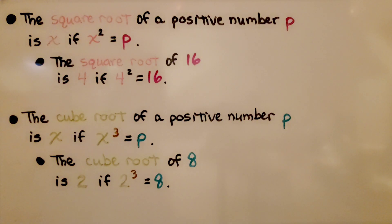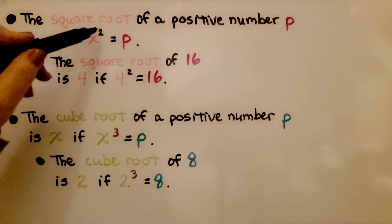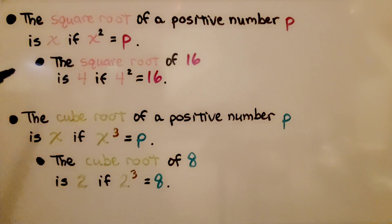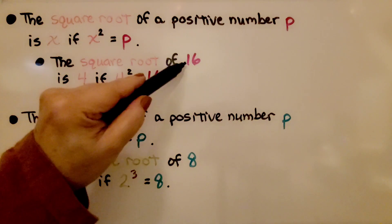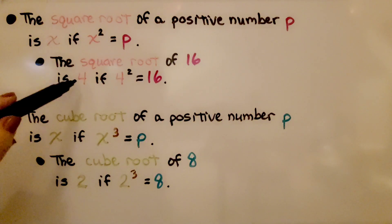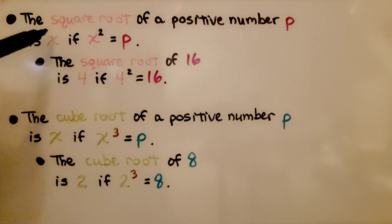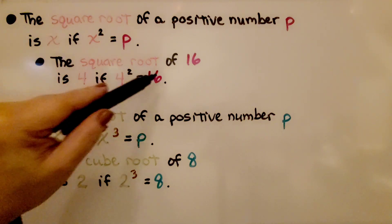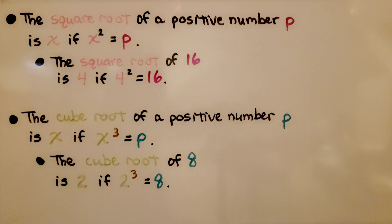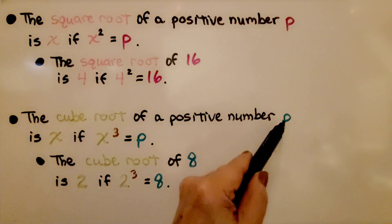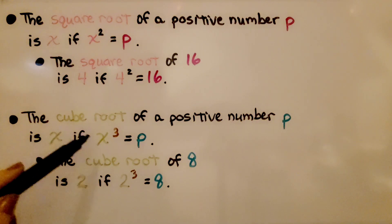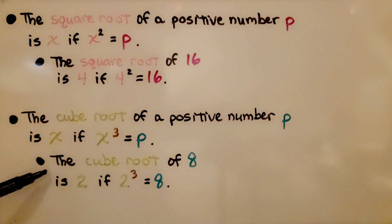The square root of a positive number p is x if x squared equals p. For example, the square root of 16 is 4 because 4 squared equals 16. Similarly, the cube root of a positive number p is x if x cubed equals p. The cube root of 8 is 2 because 2 cubed equals 8.